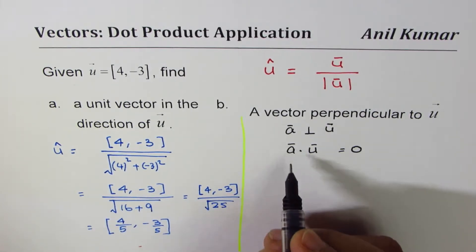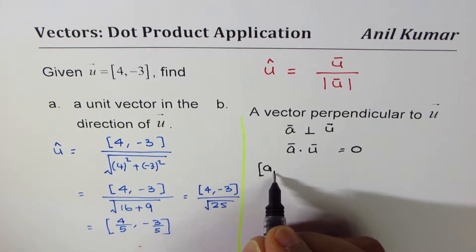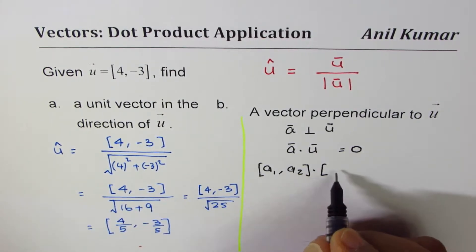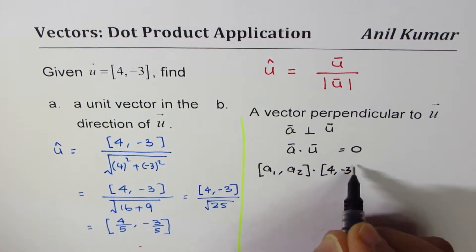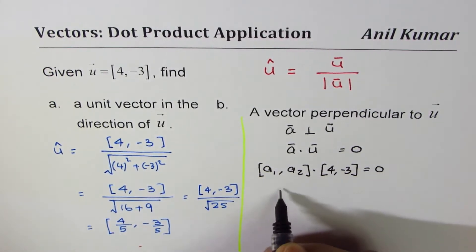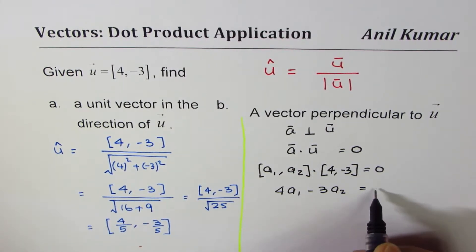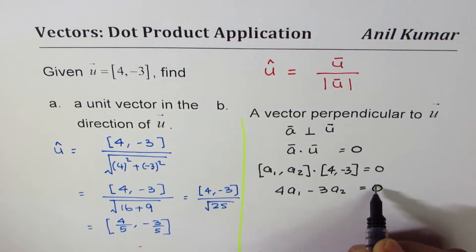We don't know what a is, but we could write this in component form [a₁, a₂]. Dot vector u [4, -3] equals 0. That means 4a₁ - 3a₂ = 0.